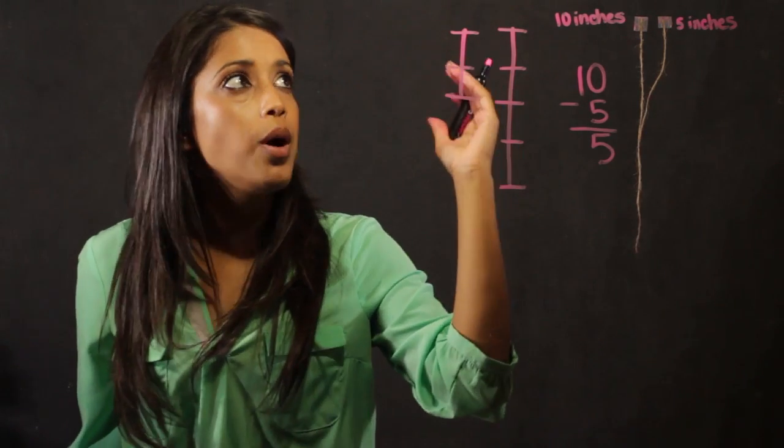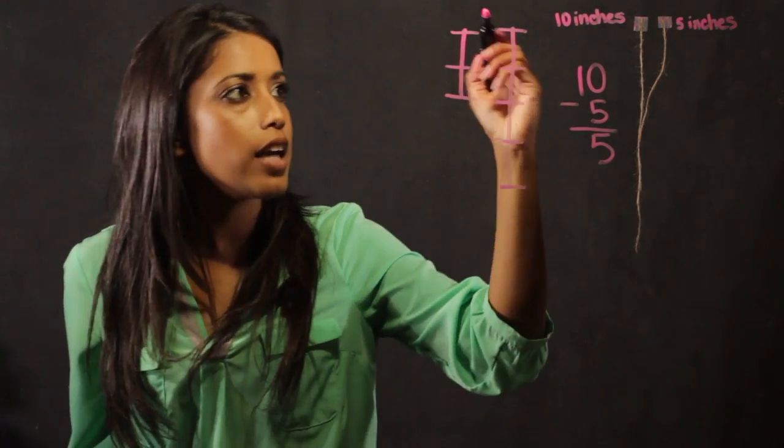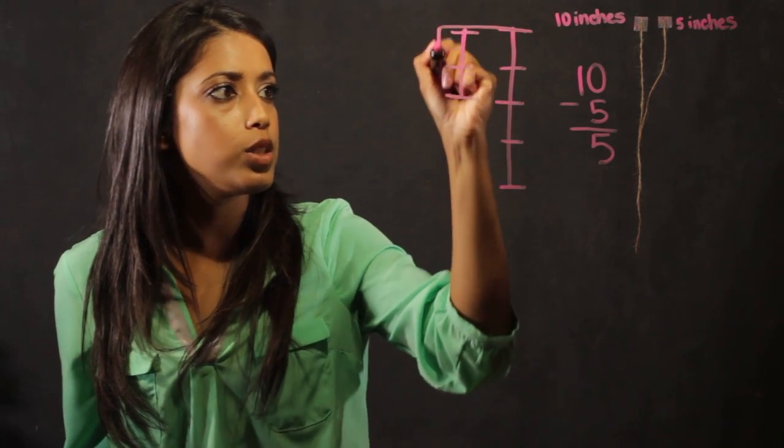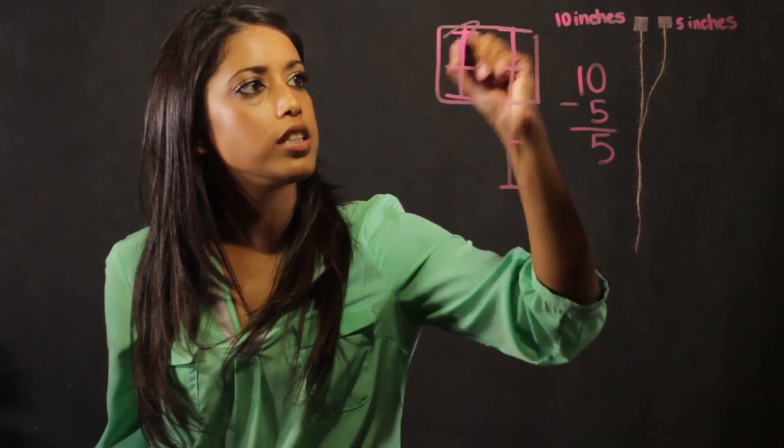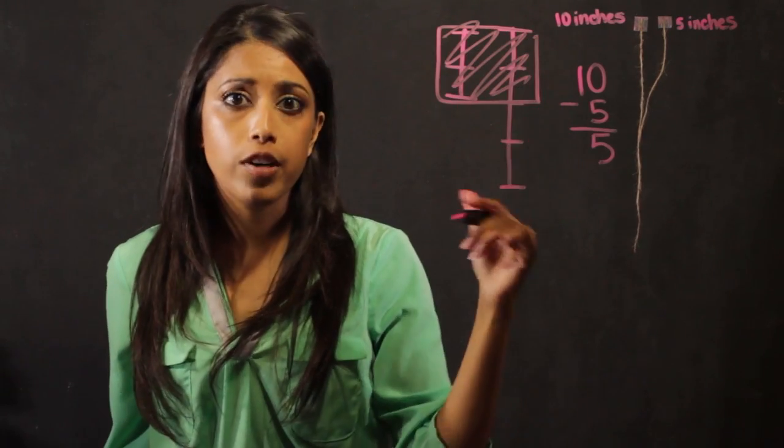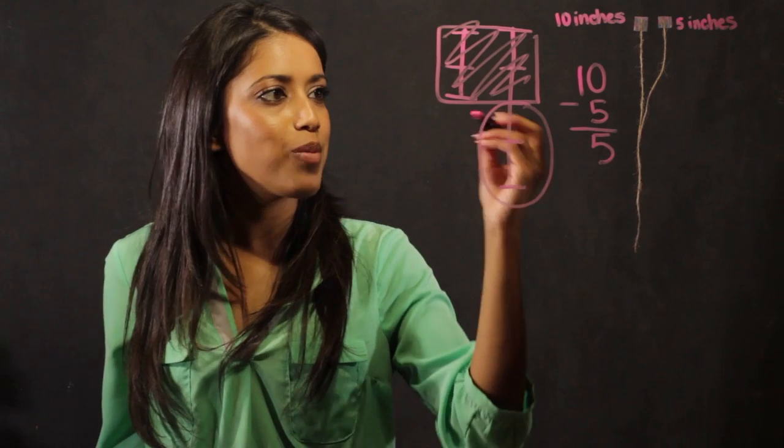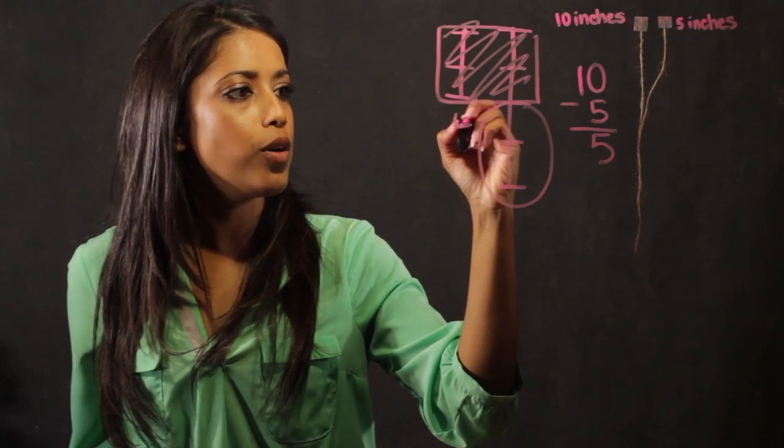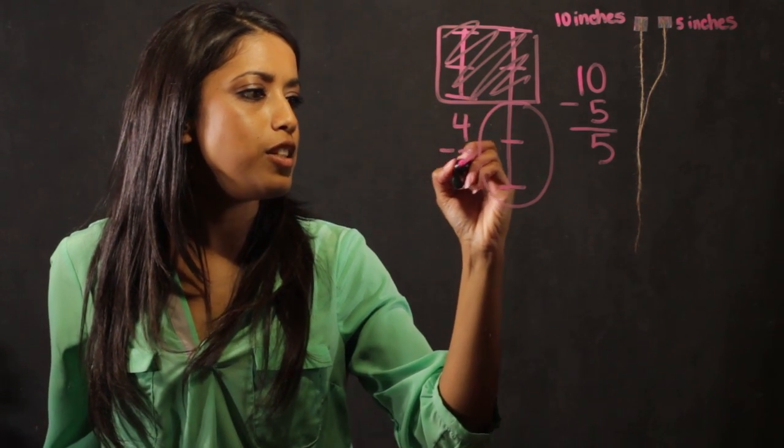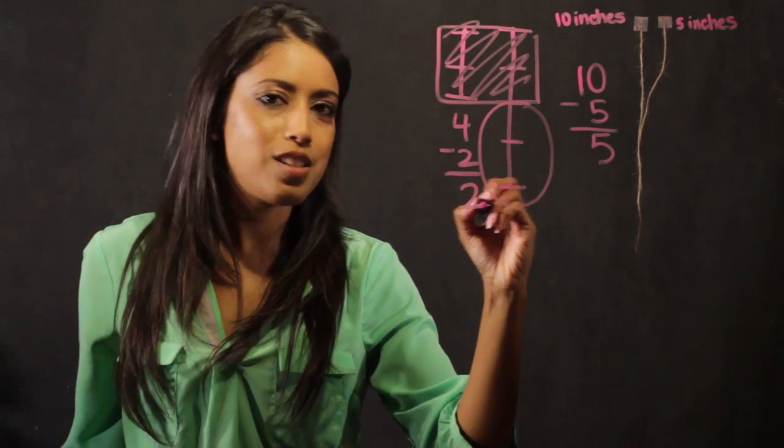Basically, if I want to do Greek math subtraction on this, I take the area that they have in common, which is right here, and I cross it off. Whatever remaining units I have, that's the answer to my subtraction problem. So it becomes 4 minus 2 is equal to 2.